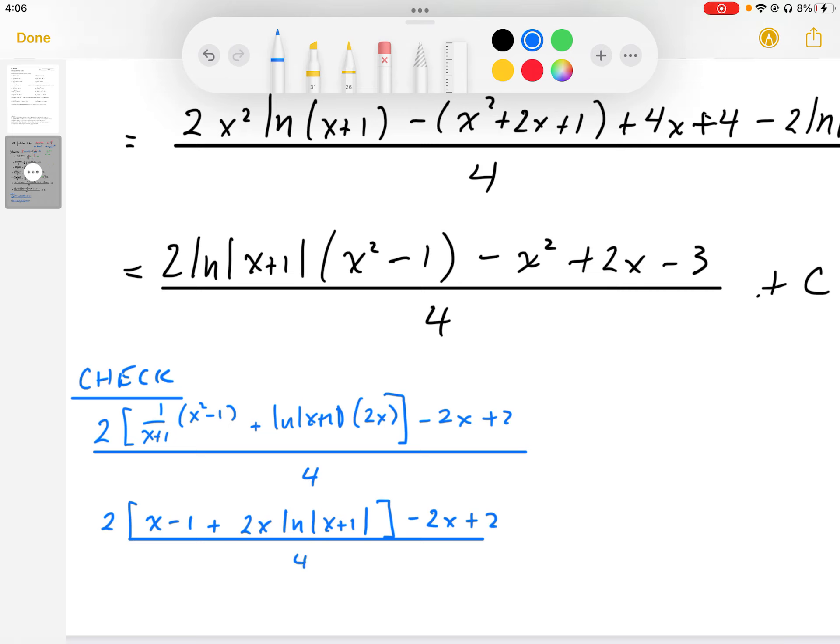And we can see that we have some terms cancel out. The 2 times this, these cancel out with these terms here, and then the 2 times 2 here, we end up with 4x log of x plus 1, all divided by 4.